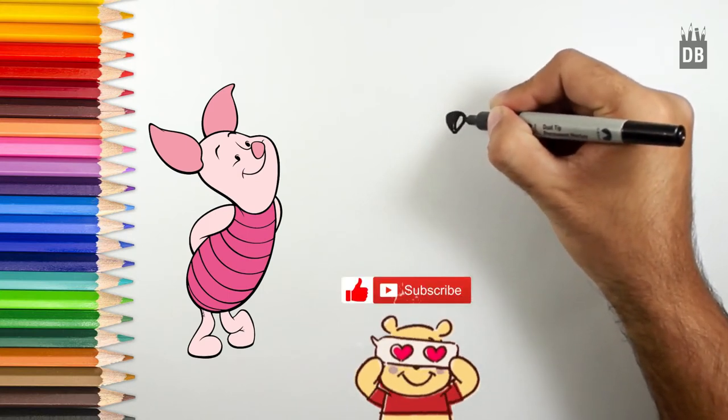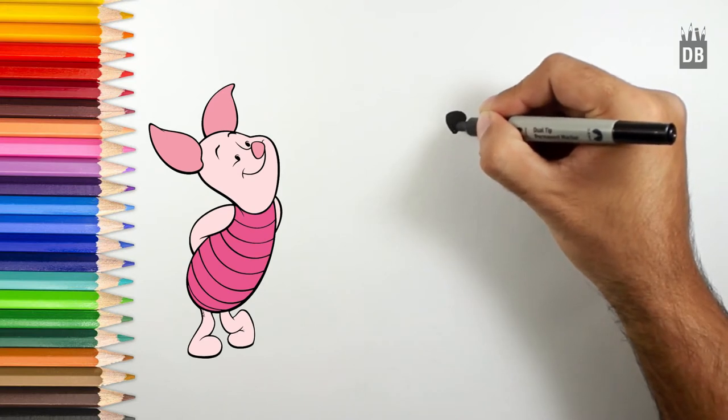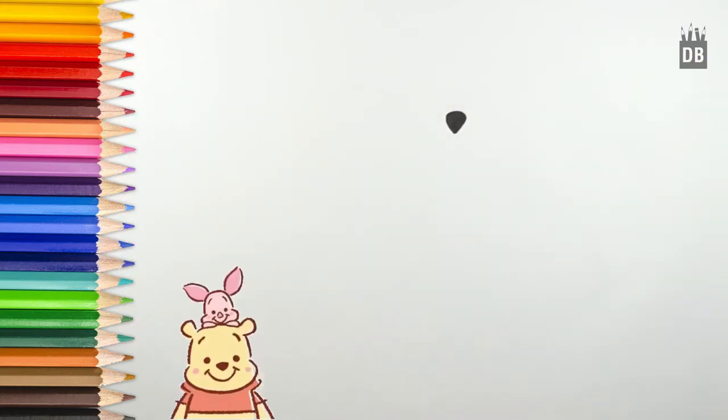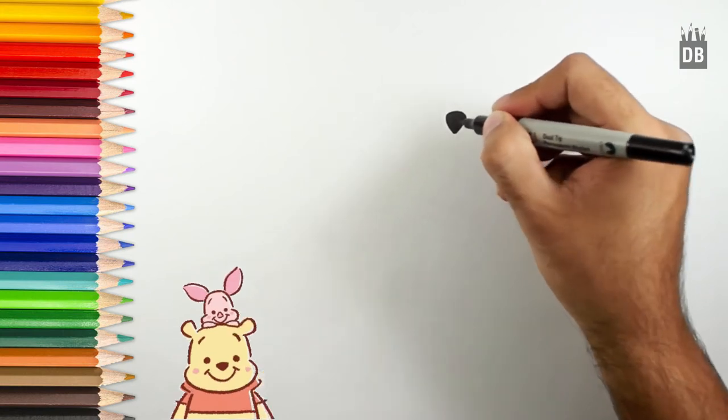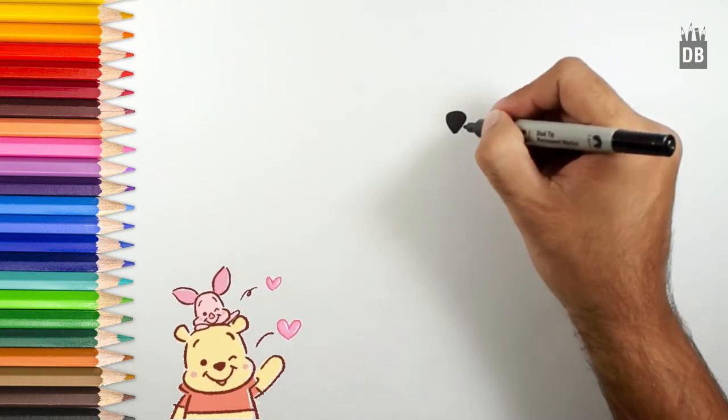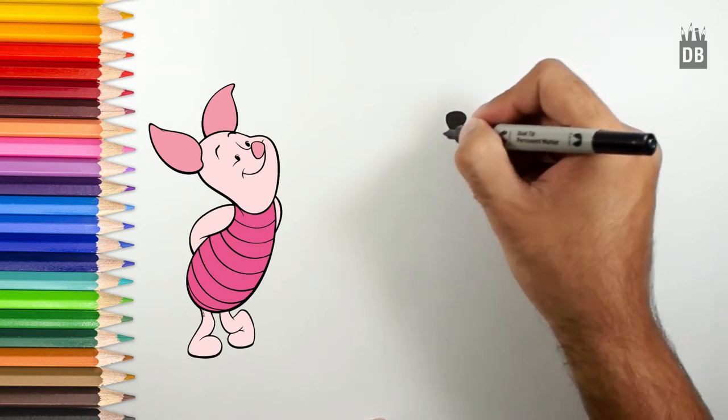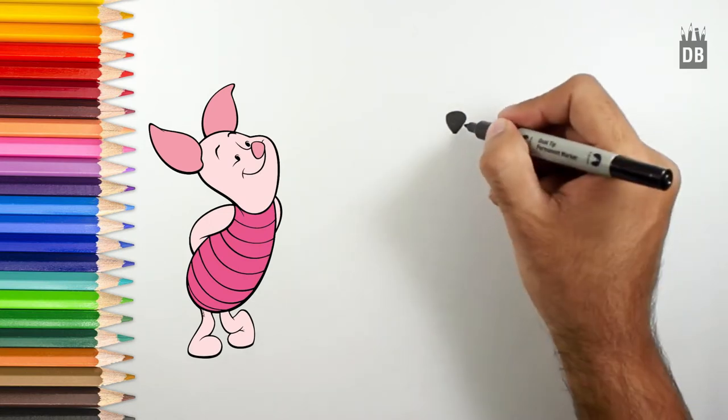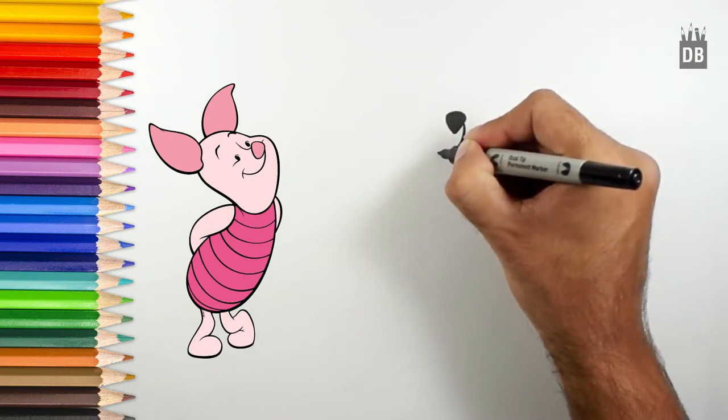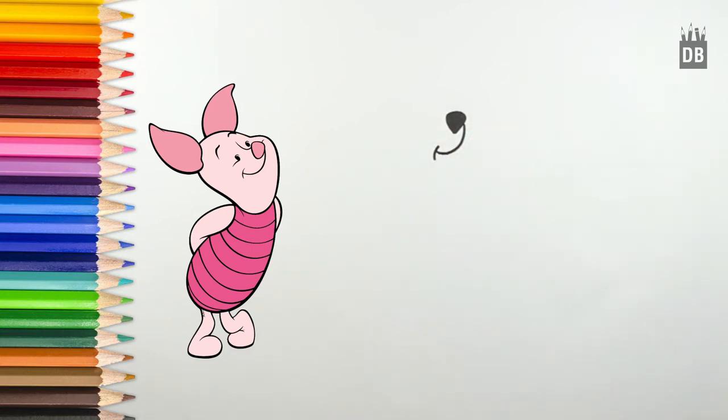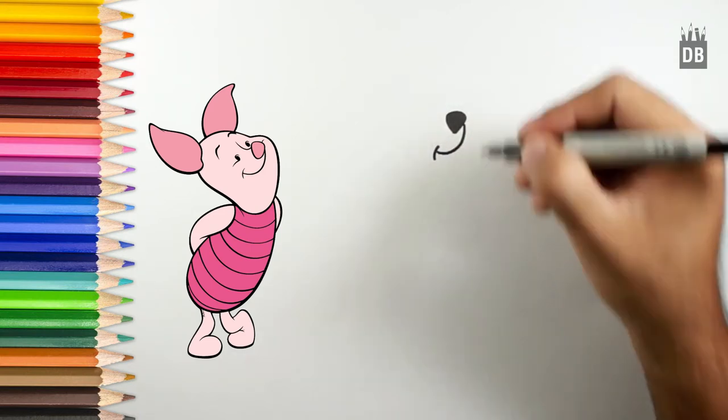You can use pencil, watercolors, or marker colors to make it look better. In the end, making the outlines in marker will give it a nice look. He's smiling, so draw a smile line like this.